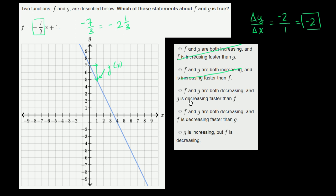So g is not decreasing faster than f, f is decreasing faster than g. So this is not right. And then we have this choice, f and g are both decreasing, and f is decreasing faster than g. This is right, right over here.